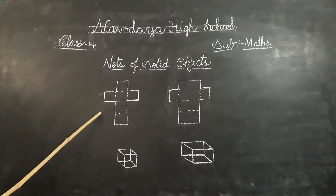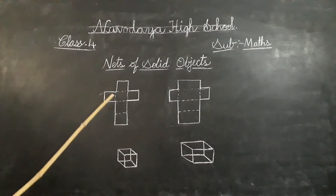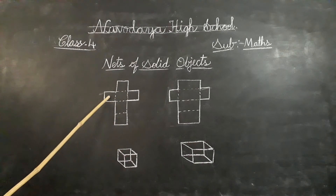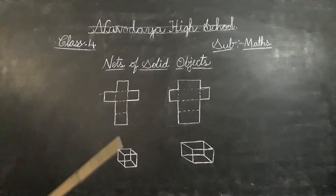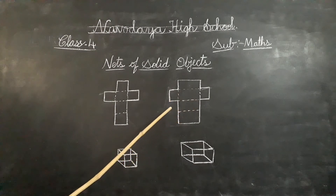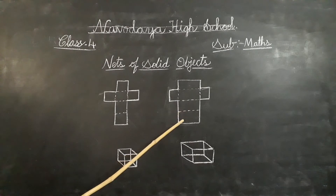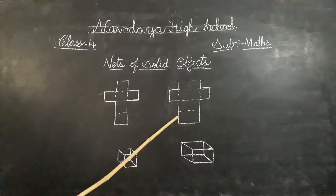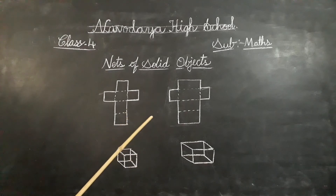Look at the net and observe the faces of the cube formed by it. Cube faces look like squares. The net is folded along the dotted lines to form the edges of a cuboid. Look at the net and observe the faces of the cuboid formed by it. All the nets of cubes and cuboids have six faces.